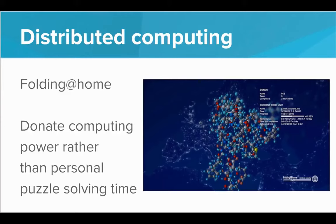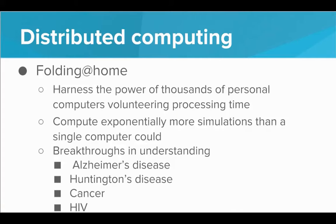The idea is that even if a team of researchers can't solve a problem in 15 years, giving it to the massive online community skyrockets the chances of someone solving it. Another example is distributed computing — specifically the Folding@Home program. Rather than a human solving a puzzle, you install the program on your computer, and it becomes part of a massive network of computing power simulating every possible combination to find the correct protein structure. Folding@Home harnesses thousands of personal computers volunteering processing time, allowing exponentially more simulations than a single computer could manage. It has led to breakthroughs in understanding Alzheimer's, Huntington's, cancer, and HIV.